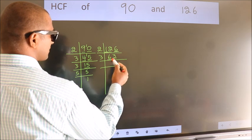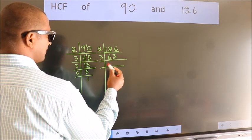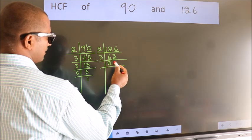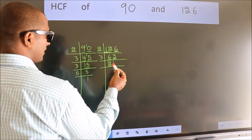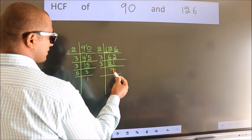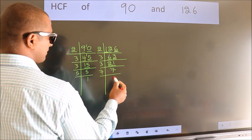First number 6. When do we get 6 in 3 table? 3, 2, 6. The other number 3. When do we get 3 in 3 table? 3 once 3. Now, 21 is 3 sevenths 21. 7 is a prime number, so 7, 1, 7.